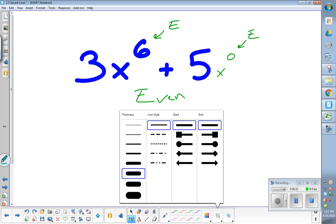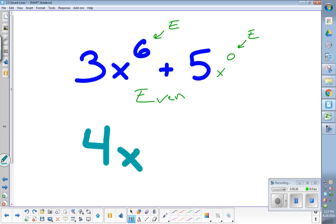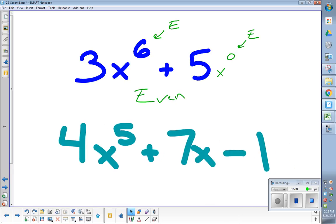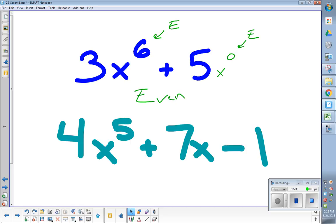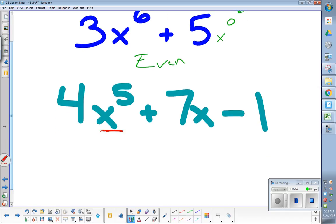Good. Let's do another one. Let's go 4x to the 5th plus 7x minus 1. 4x to the 5th plus 7x minus 1. Even, odd, or neither. Let's see what we think. This one, even or odd? Odd. This one, even or odd? Odd. Because it's to the first, that's odd. Even or odd? Even. Because that's x to the 0. Double check. That's neither.